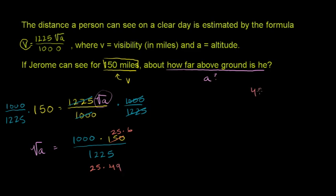Let me double check that. 49 times 25: 9 times 5 is 45, 4 times 5 is 20 plus 4 is 24. 2 times 9 is 18, 2 times 4 is 8 plus 1 is 9. Yep, it's 1225. So this is 25 times 49, this is 25 times 6. This 25 cancels with that 25.